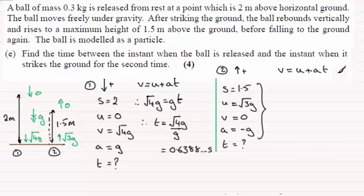And I can see that V is 0 and it's equal to U which is root of 3g. And then it's plus AT. So it's plus negative G times T. So that's minus GT.